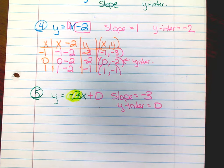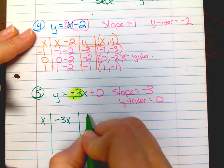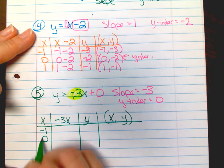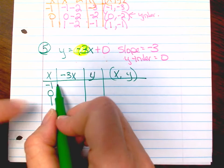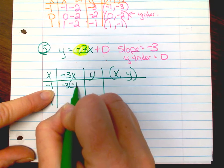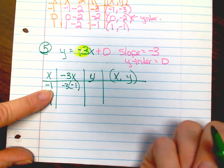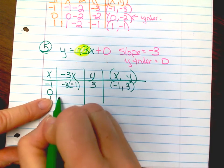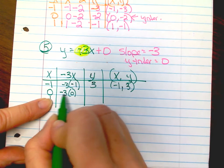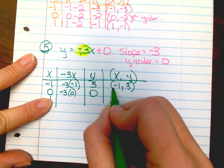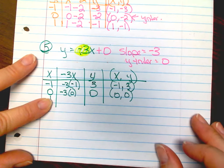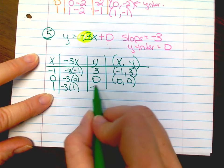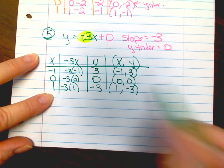Make your table: x, negative three x is your y. Then you'll have your x and your y to plot. Again, negative one, zero, one — those are my favorites. Sub negative one in for x: negative three times negative one — a negative times a negative becomes a positive — so that would be positive three. So you have negative one, three. Substitute zero for x: negative three times zero is zero. This will be your y-intercept — zero, zero. It's going through the origin. Negative three times one is negative three. So, one, negative three. And you can graph that on your paper.